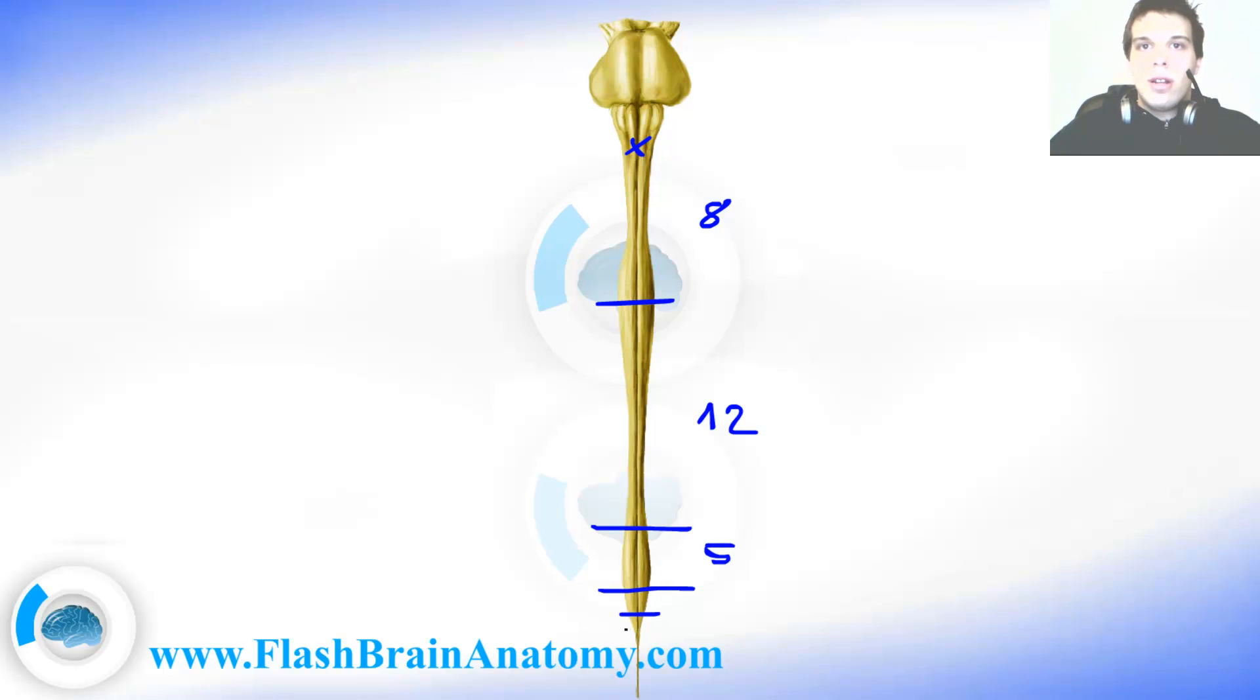The sacral and the coccygeal part. The sacral spine also had 5 segments. And then we had the terminal thread over here which gives the support to the spinal cord. It is just fibrosis tissue.